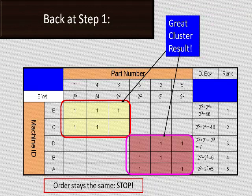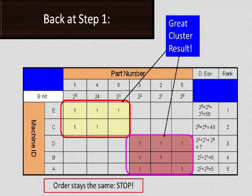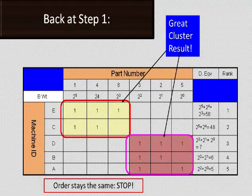Continuously repeating the steps until no change occurs, two clusters automatically form — one shown with a red boundary and another with a pink boundary. Cluster 1: machines A and C, producing parts 1, 4, and 6. Cluster 2: machines A, B, and D, producing parts 3, 2, and 5. That is how both machine cells and part families can be simultaneously formulated.